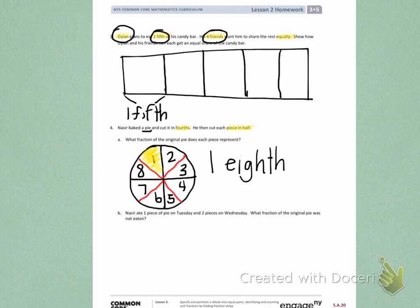So some important information. Nasir is eating one piece of pie on one day, two pieces of pie on another day. We need to figure out what part of the pie was not eaten. If I look at my picture, I can see that he ate one slice on Tuesday. Then on Wednesday, he ate two more slices.